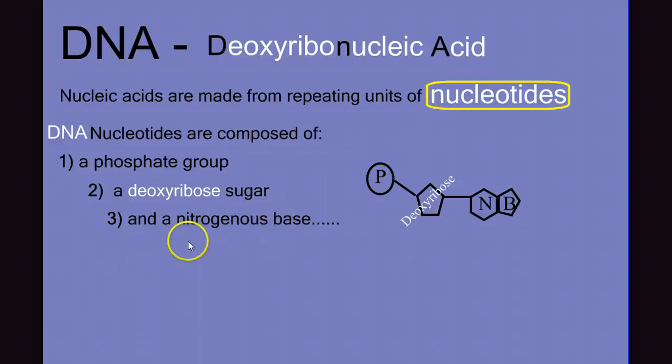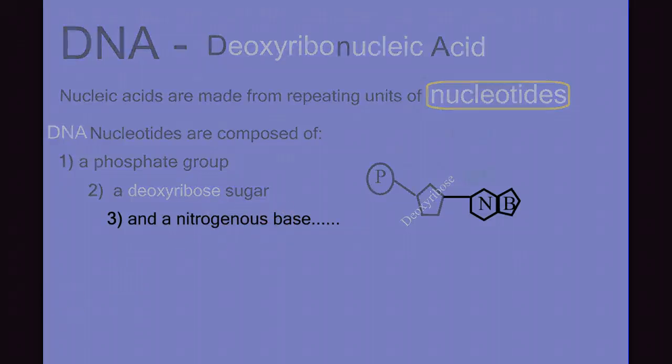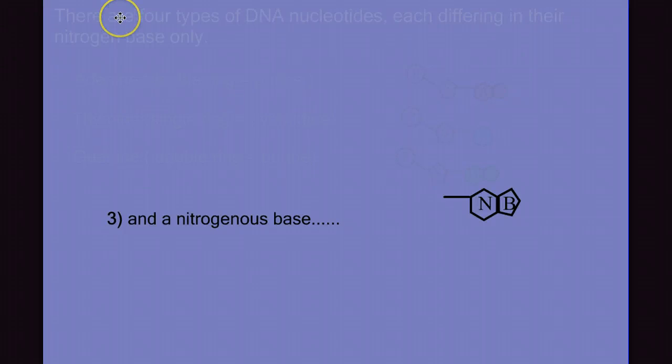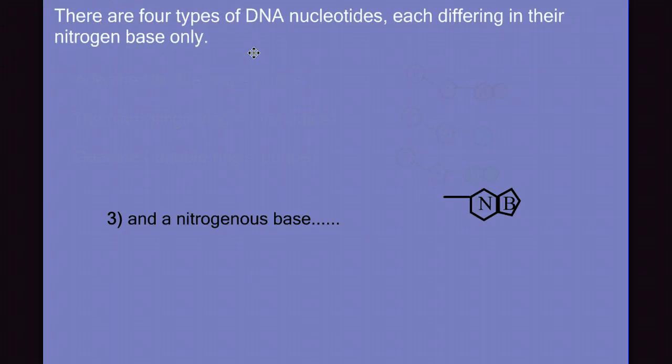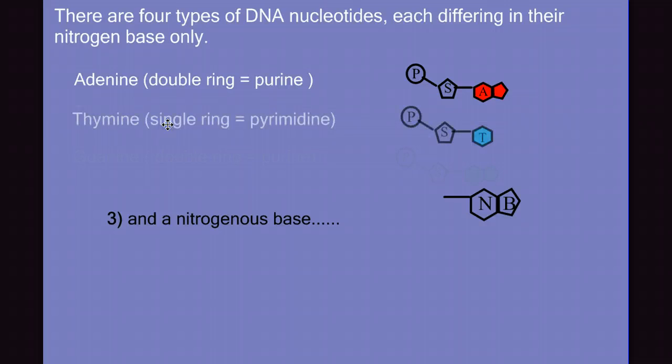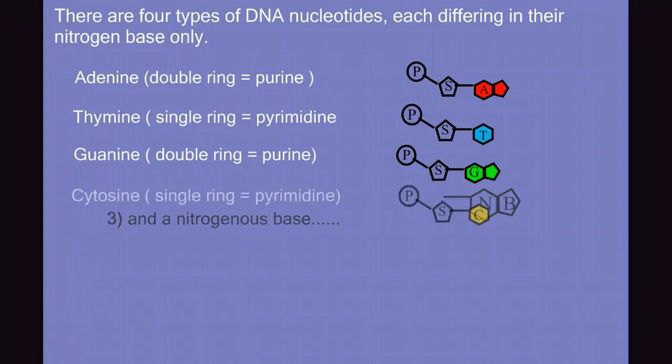Now let's take a closer look at these nitrogenous bases. There are four different types of DNA nucleotides, each differing in their nitrogen base only. There's our double-ringed adenine, it's a purine. We have thymine, which is a single ring. We call the single-ringed nucleotides pyrimidines. We have guanine, our double-ring, another double-ringed purine. And finally, cytosine, another single-ringed pyrimidine.